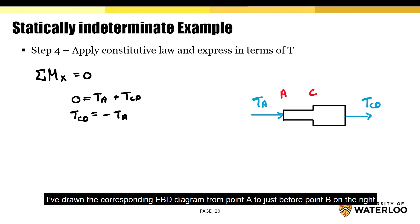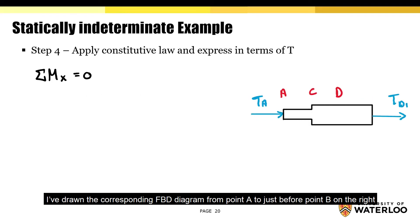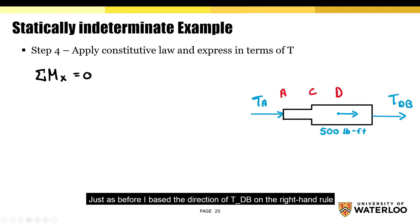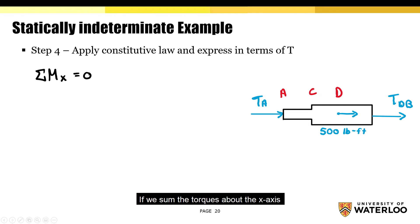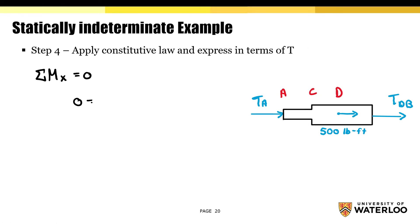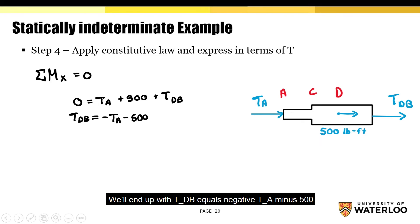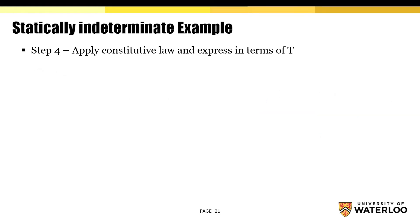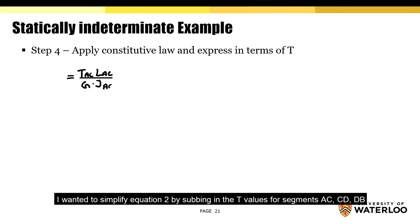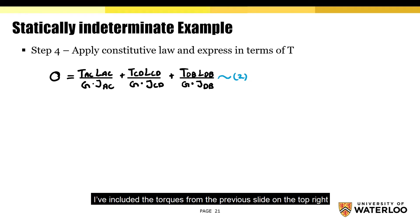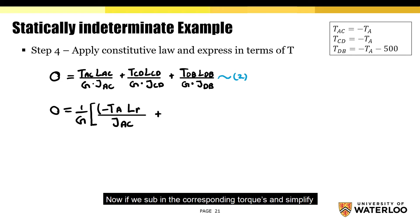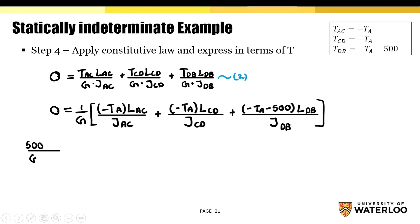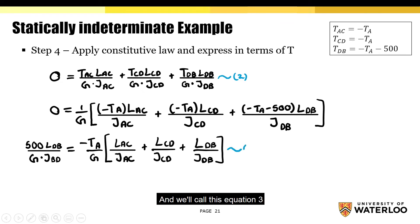Finally, for T-DB, the FBD is drawn from point A to just before point B. Basing the direction of T-DB on the right-hand rule and summing torques about the x-axis gives T-DB equals negative T-A minus 500. Substituting the T values for segments AC, CD, and DB into equation 2 and simplifying gives us equation 3.